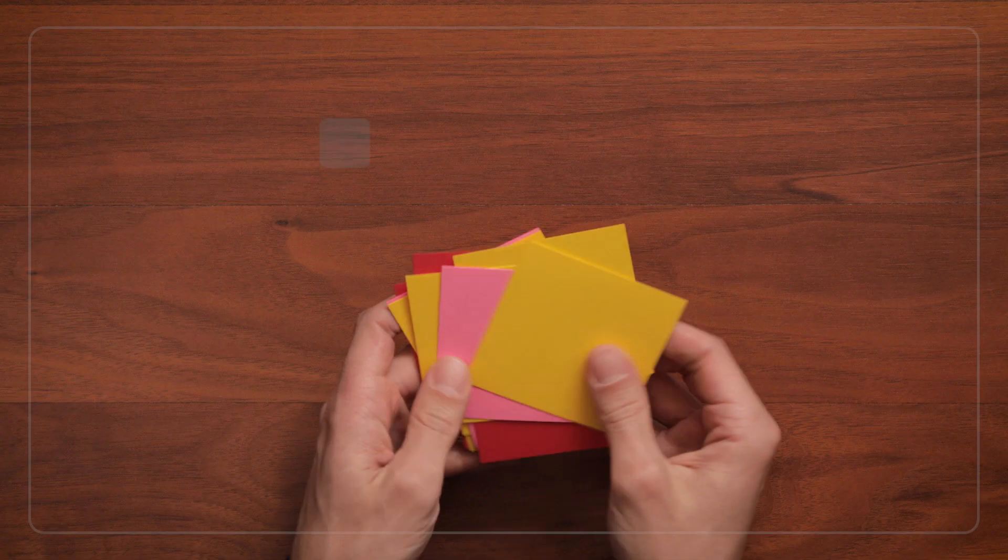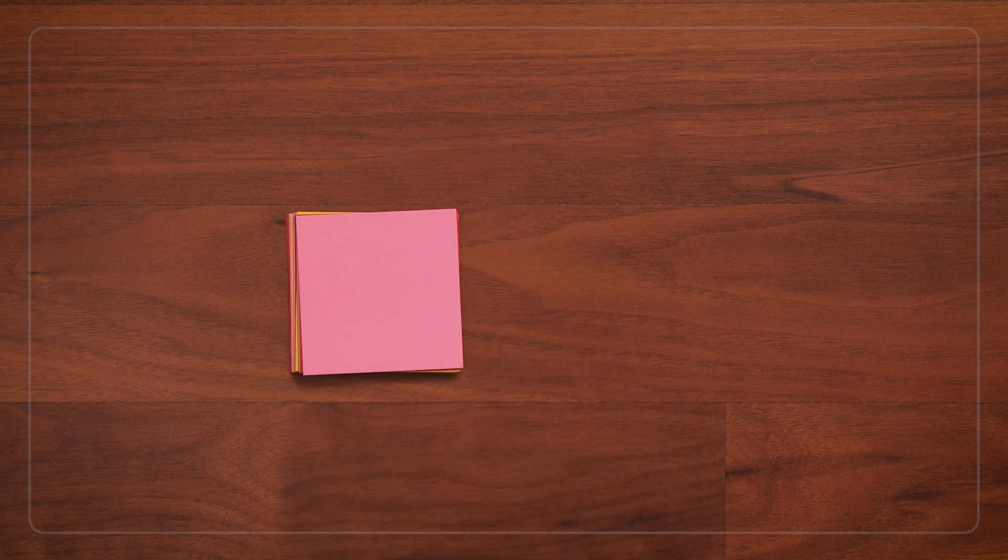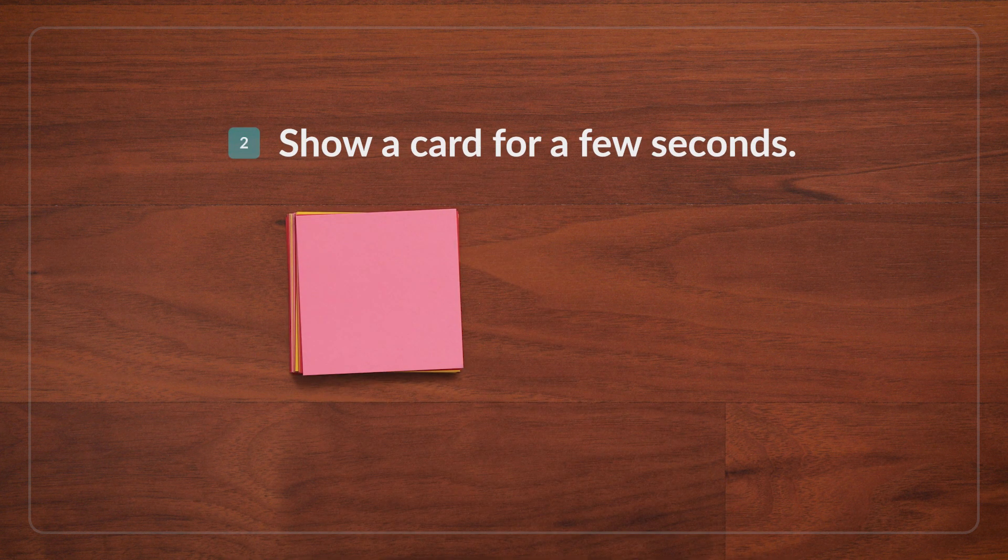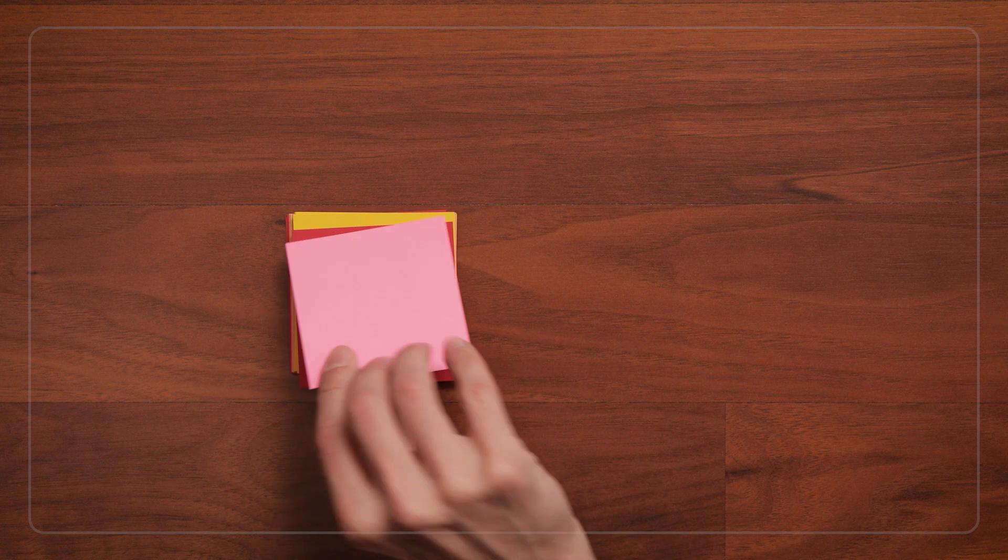To play the game, first shuffle the cards. Then show the players one card, just for a few seconds. The children look at the card and try to remember how many dots they see. Okay, so let's play, ready?